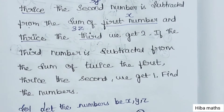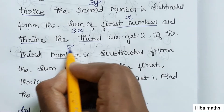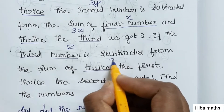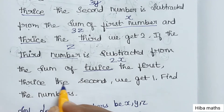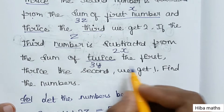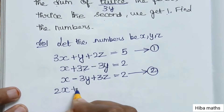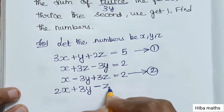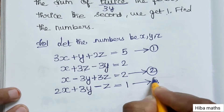For the third equation: the third number Z is subtracted from the sum of twice the first number 2X and thrice the second number 3Y, and we get 1. So the third equation is: 2X + 3Y - Z = 1.